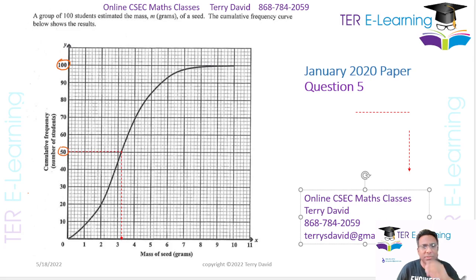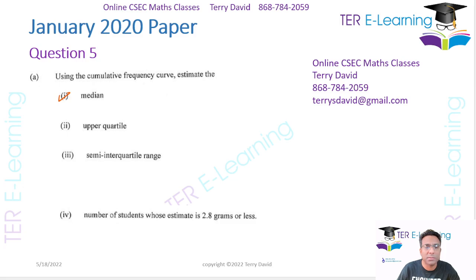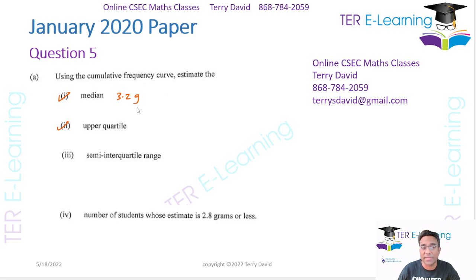So I'm getting 3.2 as my median. We'll work with that. So this is going to be 3.2 grams as my median. Next, we want to figure out what is the upper quartile.